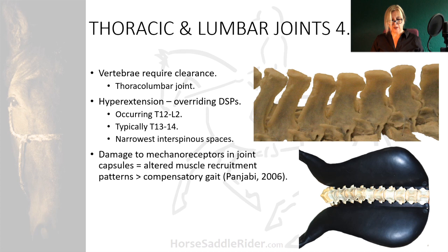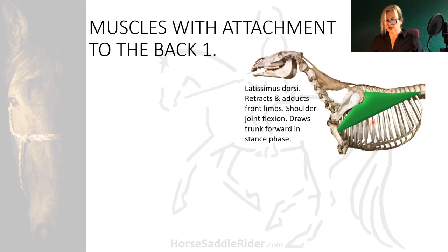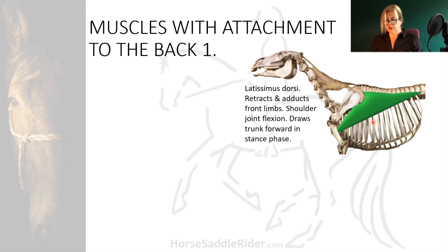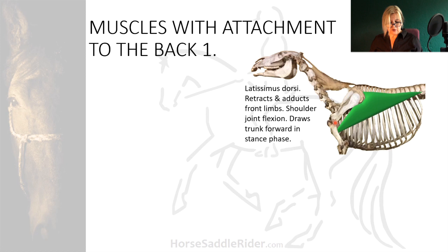Muscles with attachment to the back include latissimus dorsi — a superficial muscle with its origins in the lumbar dorsal fascia and insertion into the medial humerus. The rider and saddle exert pressure onto this muscle before reaching the deeper longissimus dorsi. This muscle is directly involved in thoracic limb movement: retracting it to facilitate stride, drawing the trunk over the ground when in stance, adducting the limb towards the midline for turns, and flexing the shoulder joint for jumping.